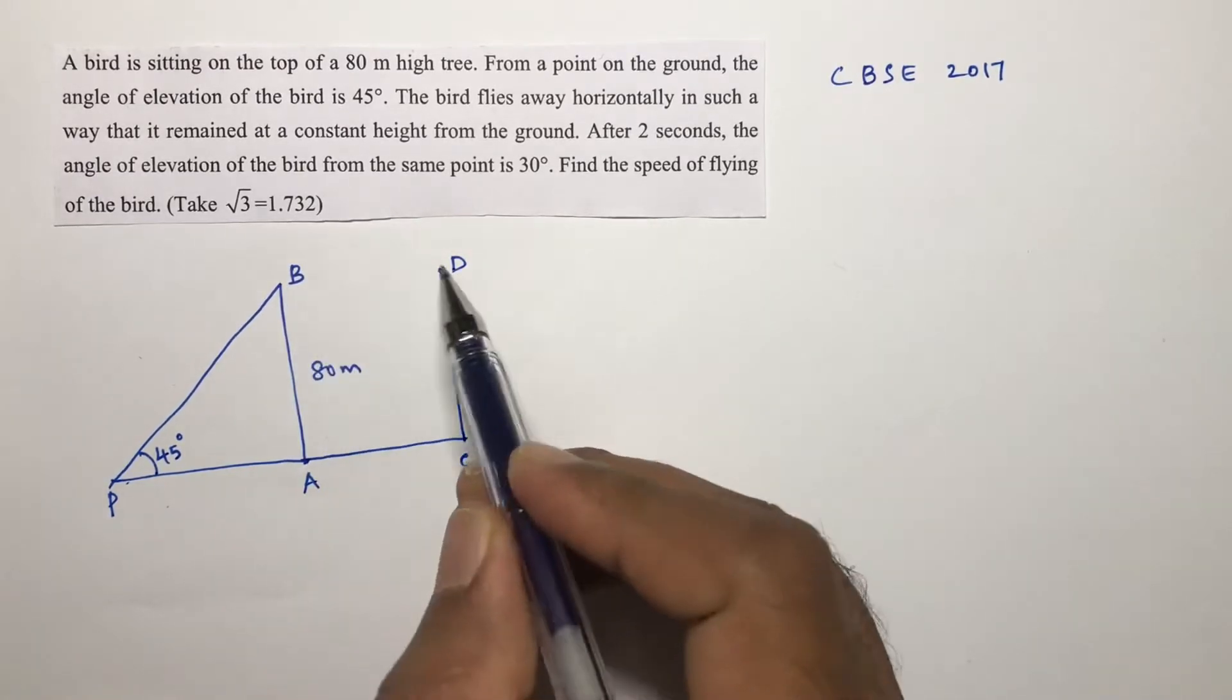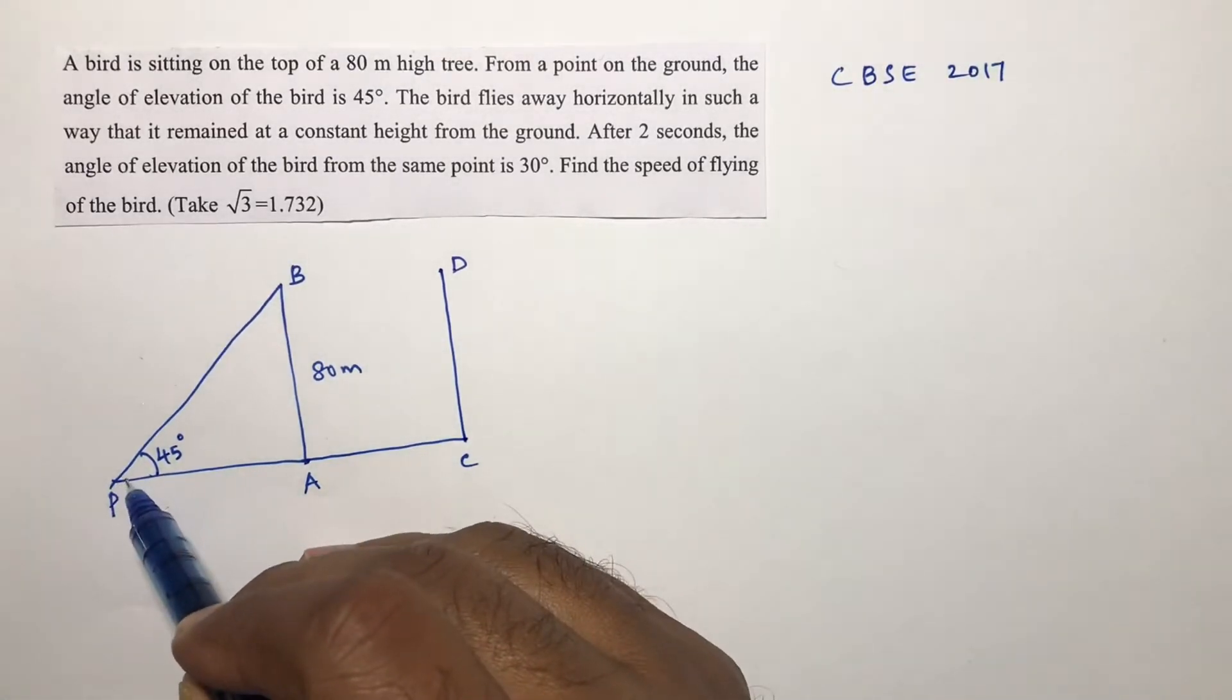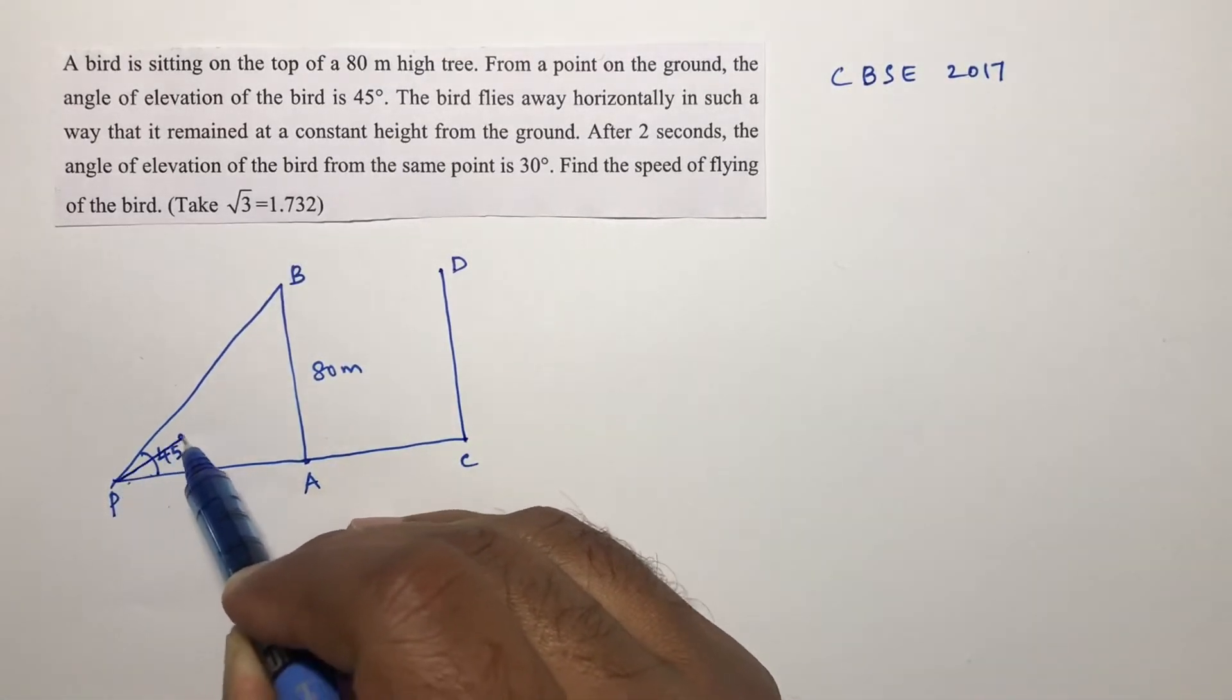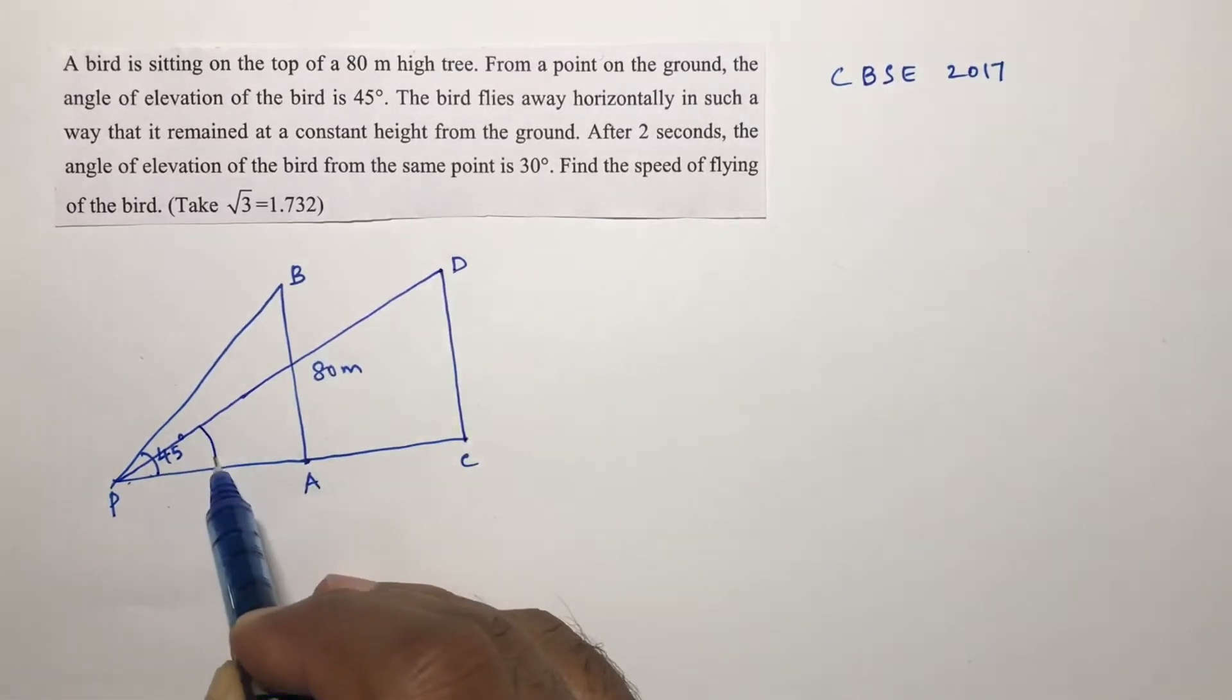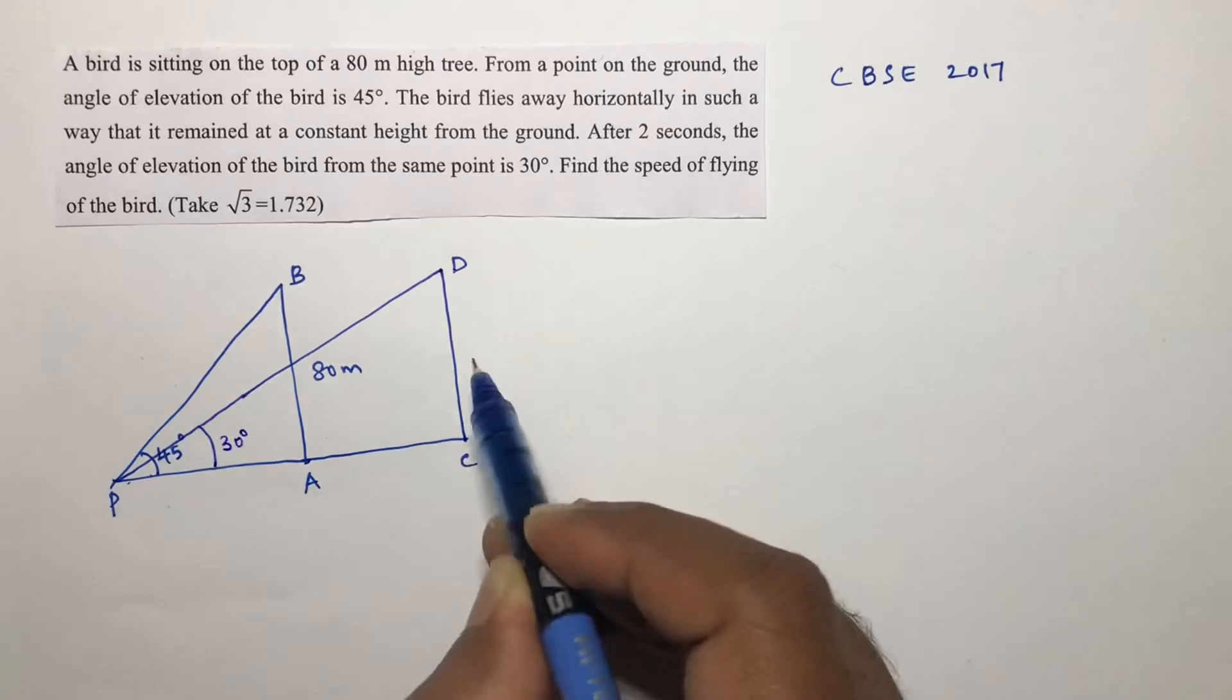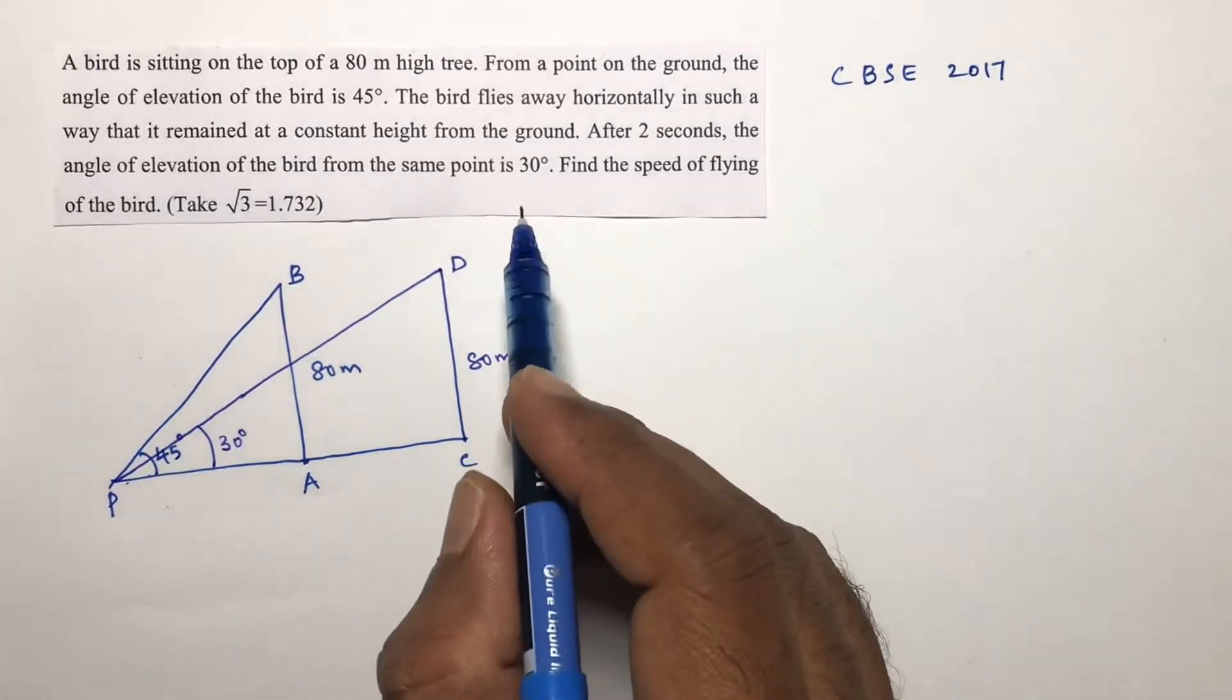From here to here it took two seconds. Now the angle of elevation changes to 30 degrees. This angle is 30 degrees, height is 80 meters.